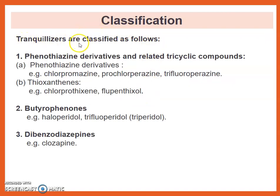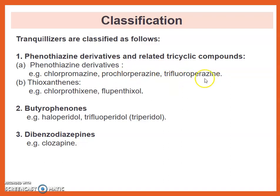Tranquilizers are classified as follows. First, Phenothiazine derivatives and related tricyclic compounds, which are again divided into Phenothiazine derivatives — for example, Chlorpromazine — and Trifluoropromazine. Second, Phenothiazine derivatives, for example, Chlorpromazine and Fluphenazine.